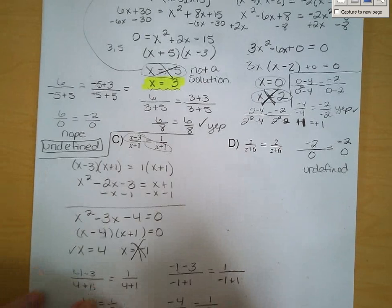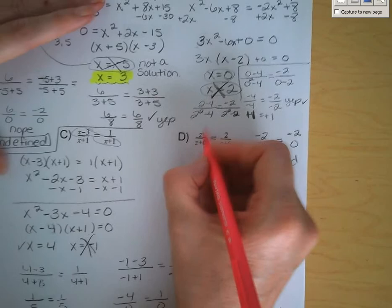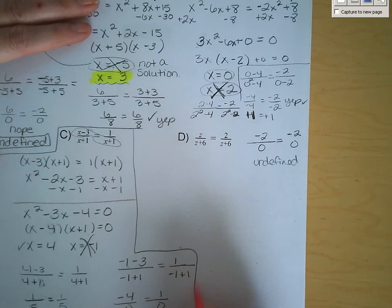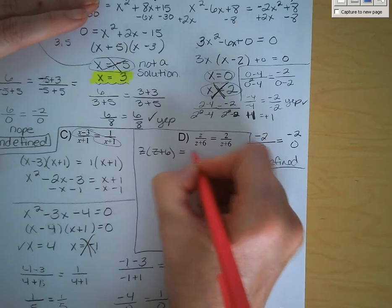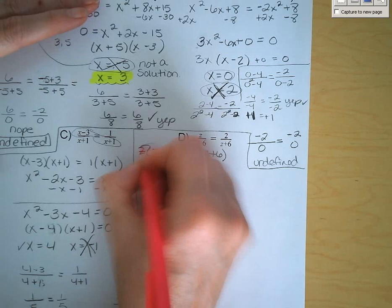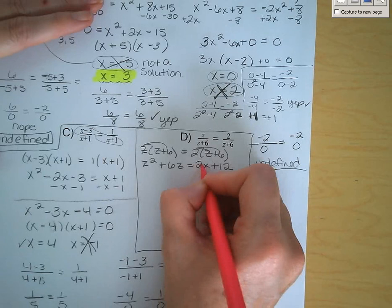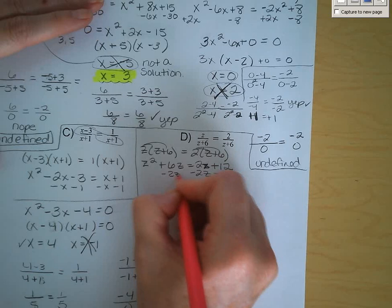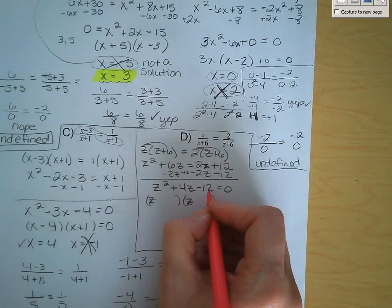Last problem, letter d: we've got Z times the quantity Z plus 6 is equal to 2 times the quantity Z plus 6. Make sure you use the distributive property: Z squared plus 6Z is equal to 2Z plus 12. Subtract 2Z plus 12 from both sides, and we get Z squared plus 4Z minus 12 equals 0. Factor — looking for multiples of negative 12 that add up to positive 4: positive 6 and negative 2. Our two solutions are Z equals negative 6 and Z equals 2.